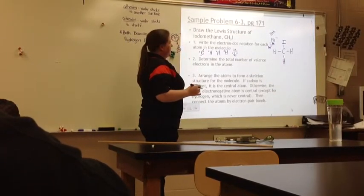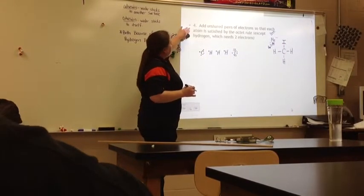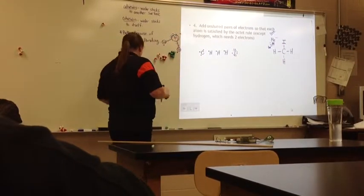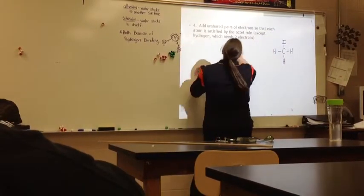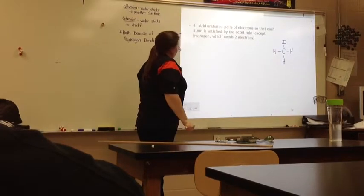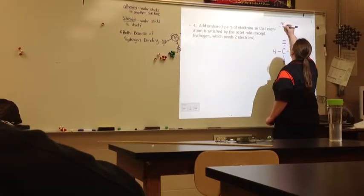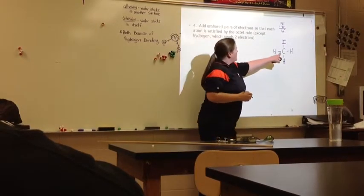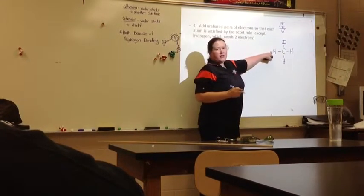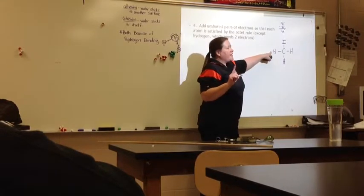I just used eight so that I could make the skeletal arrangement. This is always your first step. Again, don't start worrying about getting fancy at this point. Just follow the steps. The next thing says, add unshared pairs of electrons so that each atom is satisfied by the octet rule. I started with fourteen electrons. I used eight electrons, which means I have six electrons left.